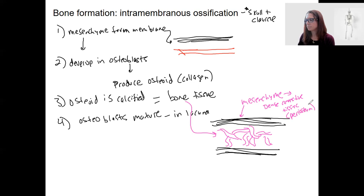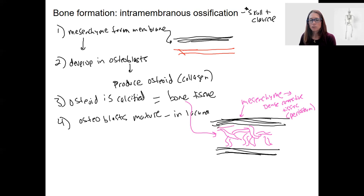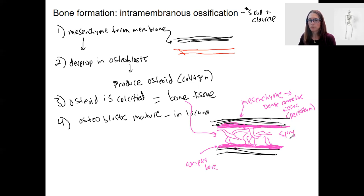Osteoblasts at the surfaces can fill in space — along the edges, osteoblasts keep doing their thing, keep dividing, and producing more osteoid. So you're going to have compact bone along the outer surfaces, like a sandwich with spongy bone in the middle.